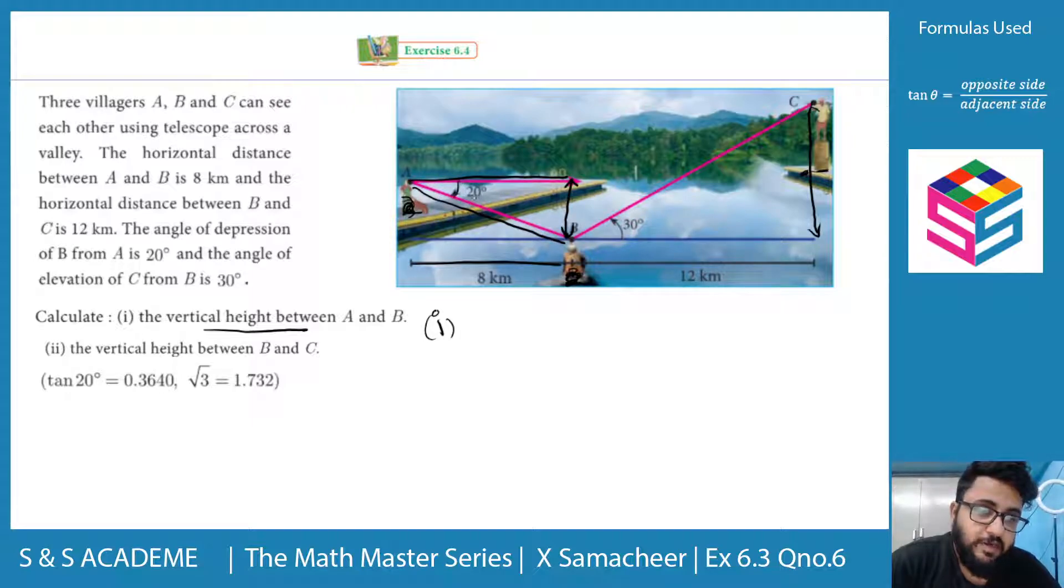If you look at this triangle, if you look at this angle, there are 20 degrees. So, tan 20 is equal to the opposite side. We know that, that is x, divided by the adjacent side, the horizontal distance between A and B, which is given as 8.